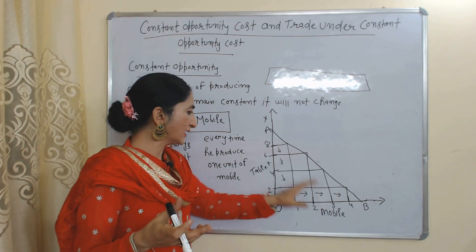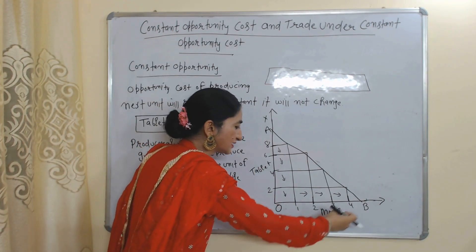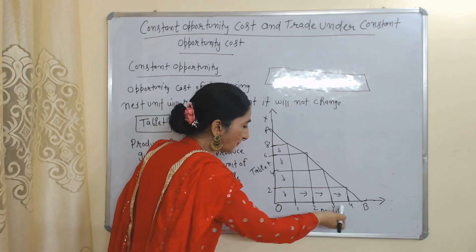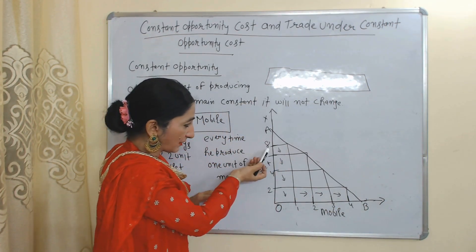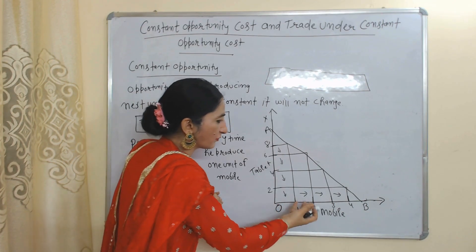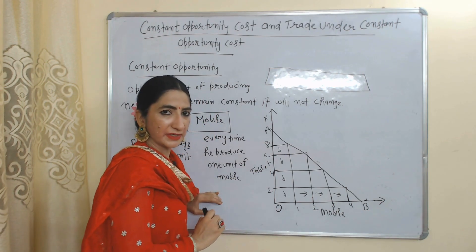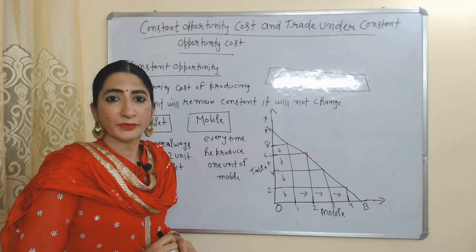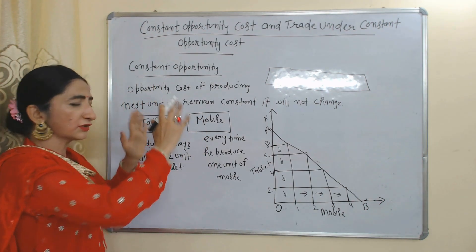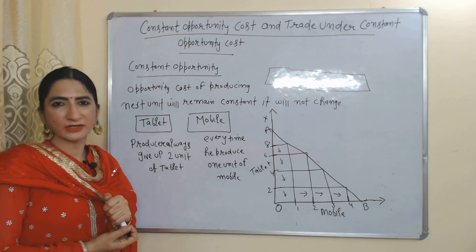In this diagram you can see on the x-axis we have mobile and on the y-axis we have tablet. When the producer is increasing one more unit of mobile — one, two, three, four — they are giving up two units of tablet — eight, six, four, two. Only one unit of mobile is increasing but the producer is giving up two units of tablet, so it will be called constant opportunity cost because the opportunity cost of producing the next unit remains constant.